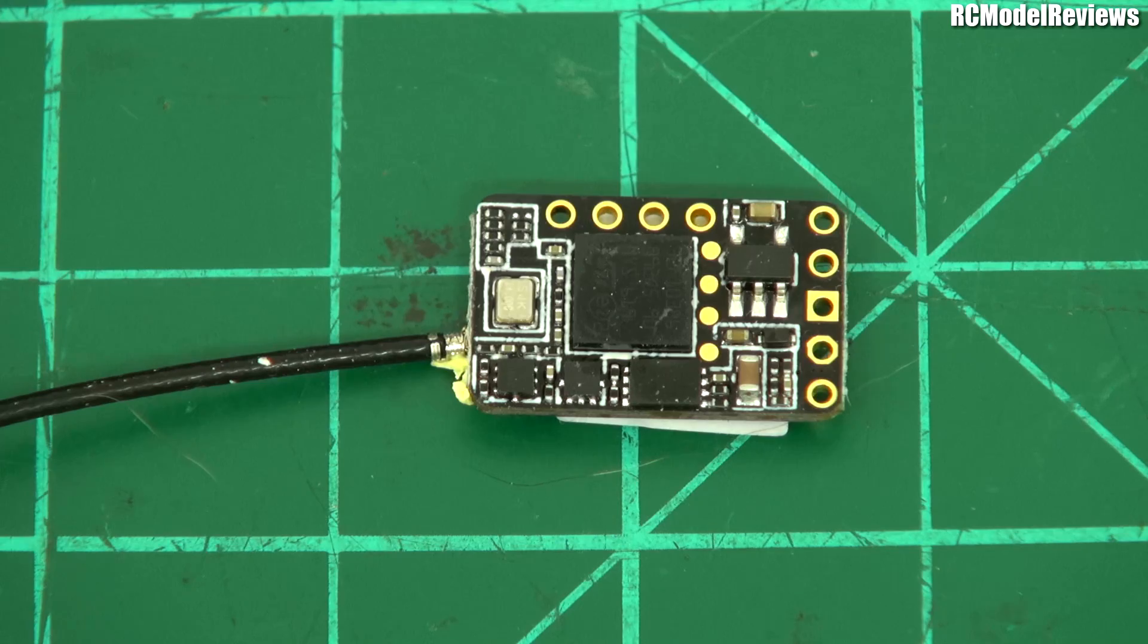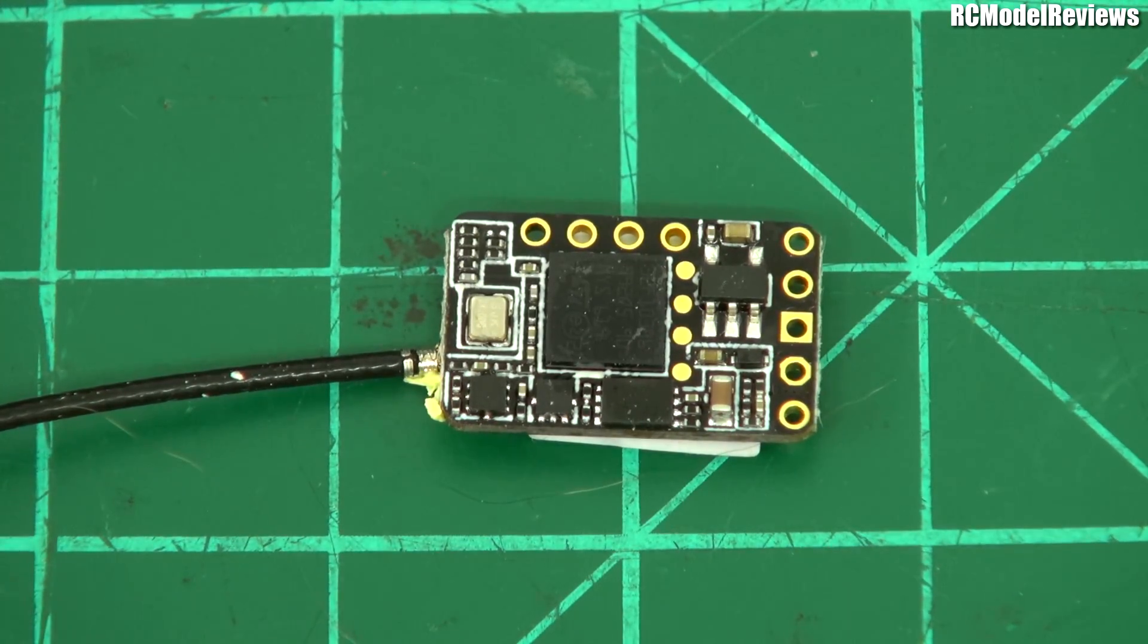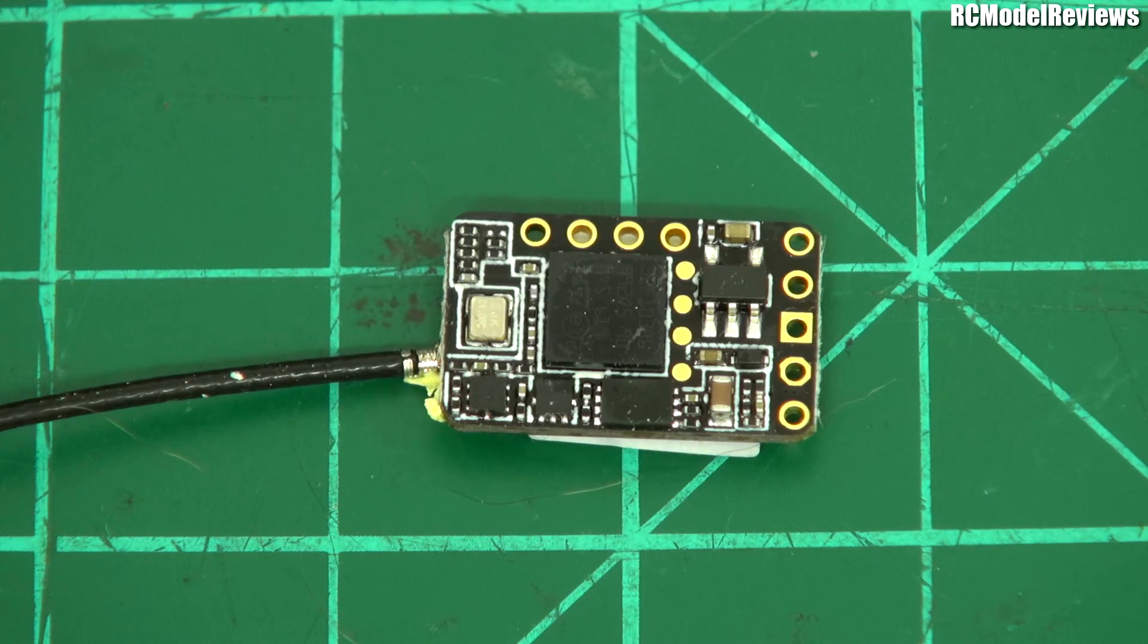Basically you've got four connectors or five connectors down here, which is your S.bus, S.port, plus, minus, and F.port. On this side you've got four independent channel outputs.